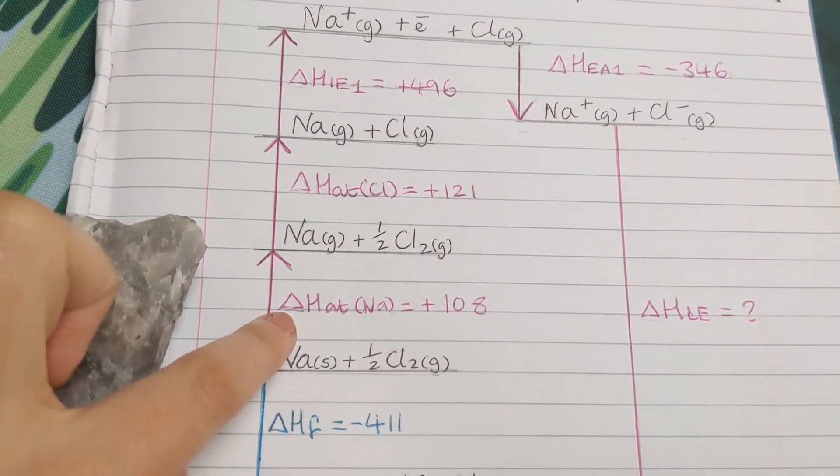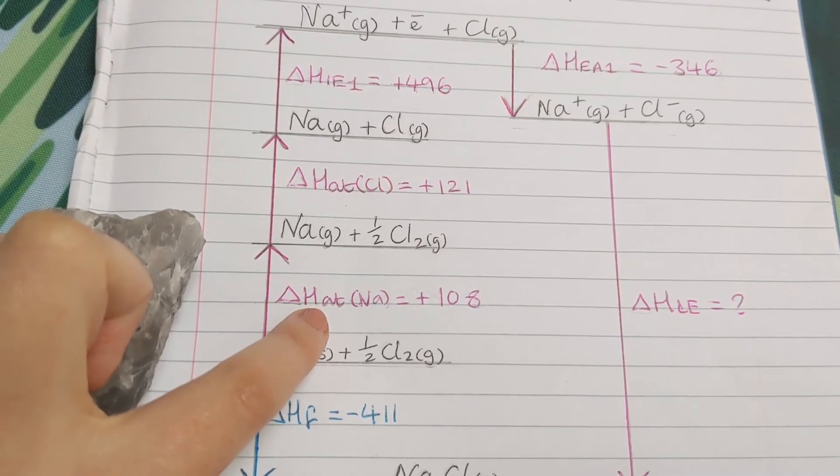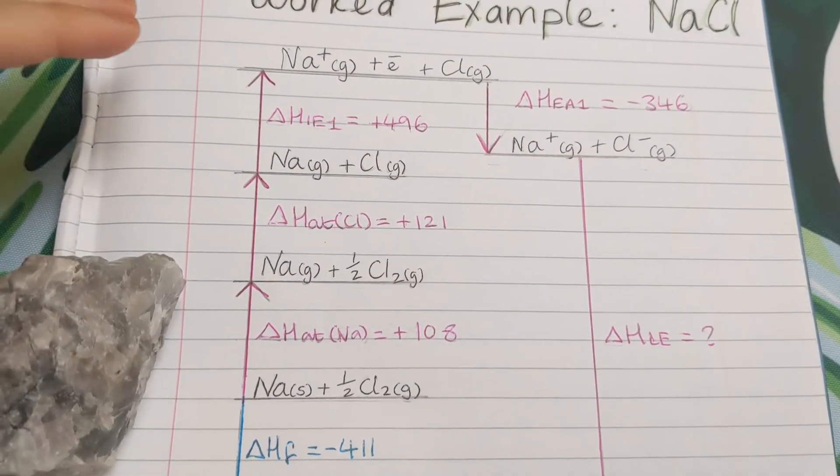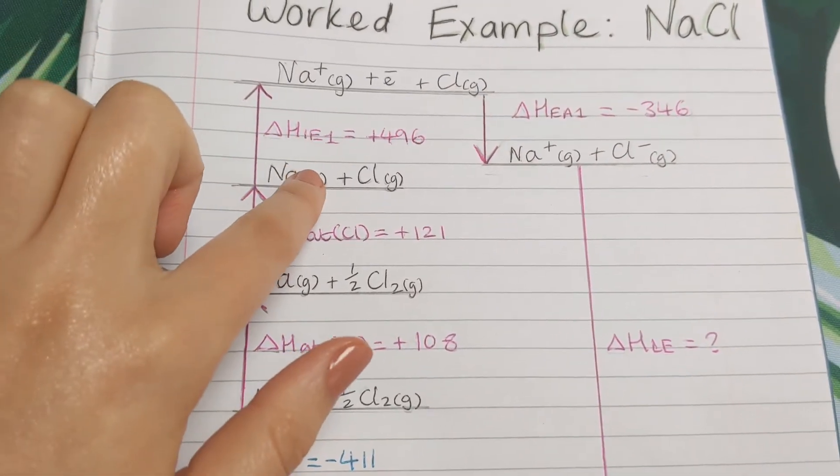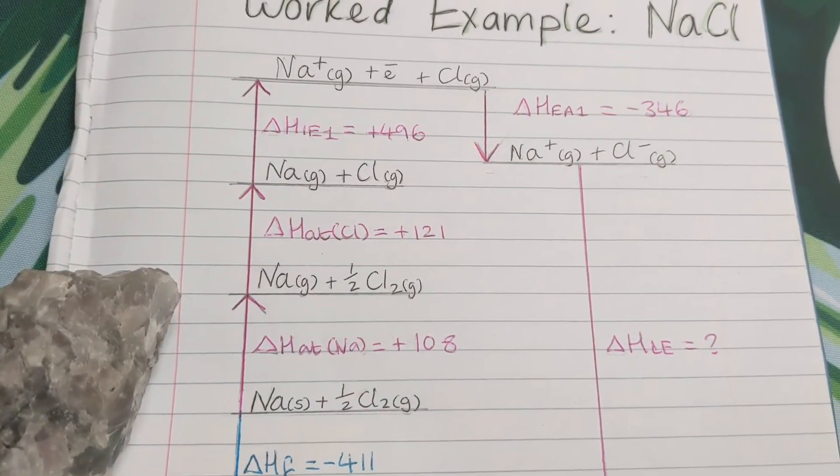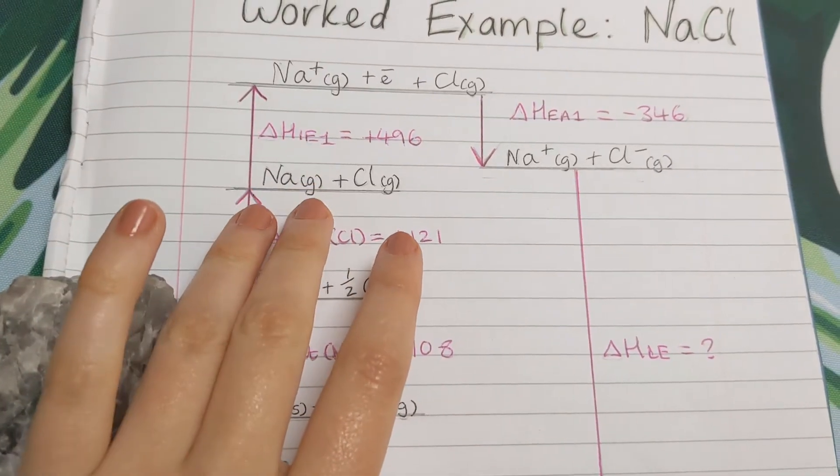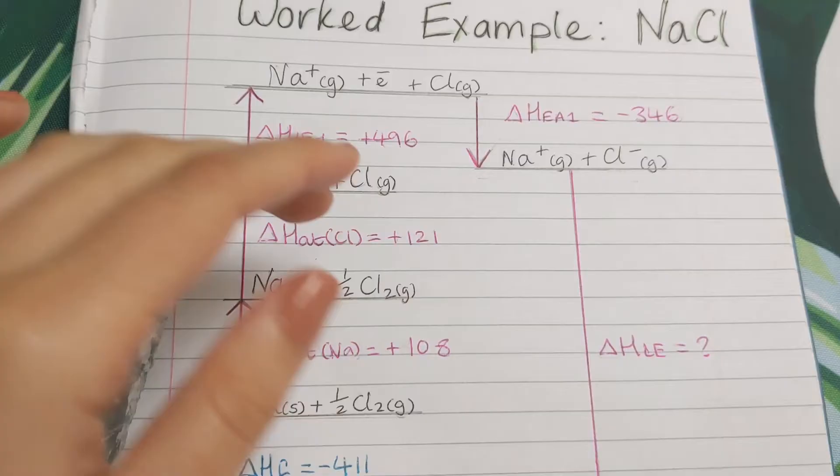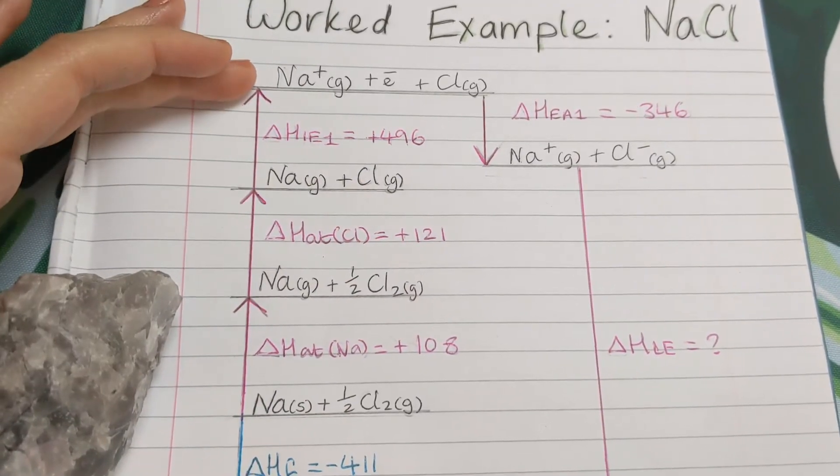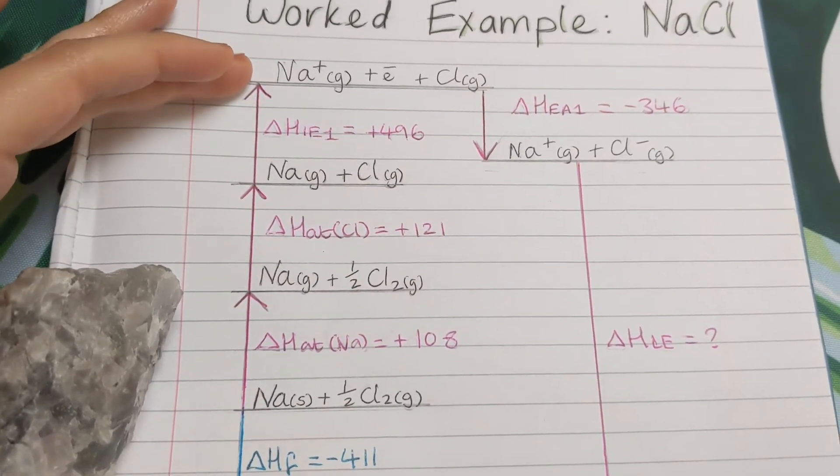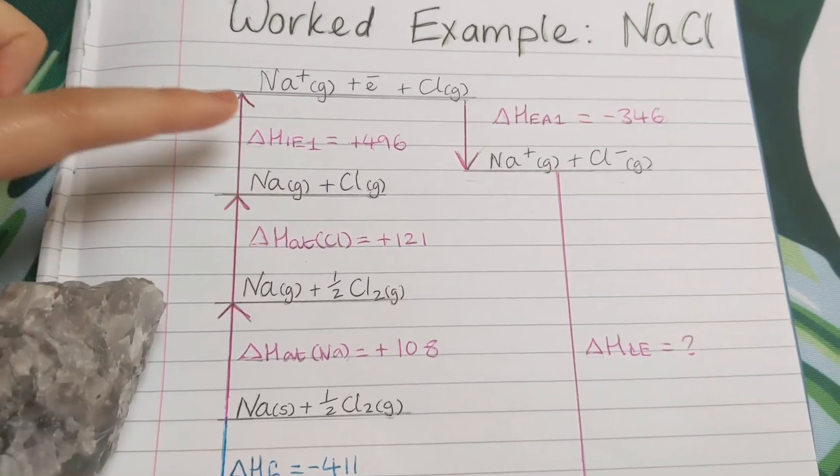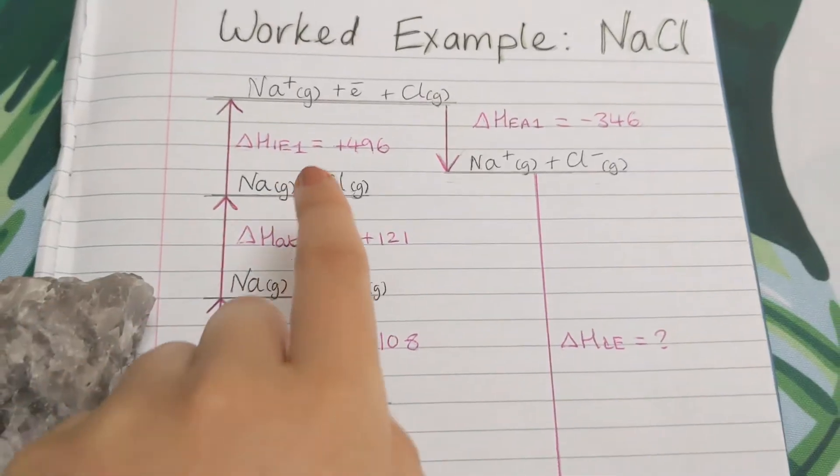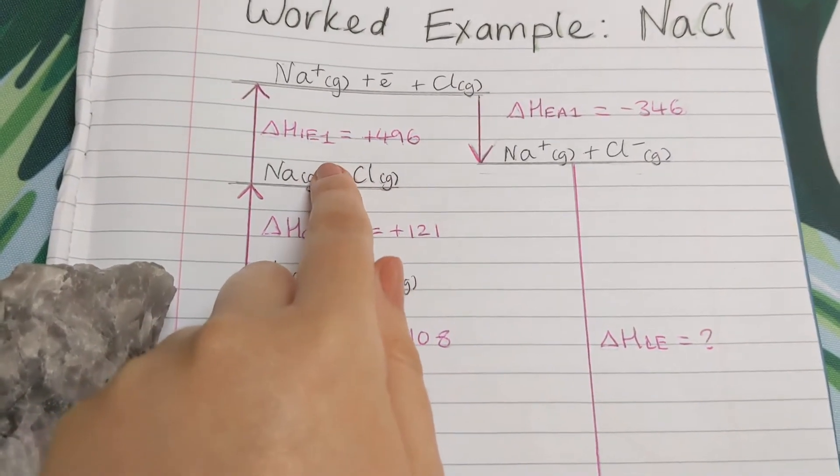Triangle means change in. Capital H means enthalpy, which is a posh word for energy. So energy change to lose one mole of electrons. So it's only the metal that's going to have a first ionisation energy, because metals form positive ions, whereas non-metals do not. So sodium gas goes to sodium one plus gas.